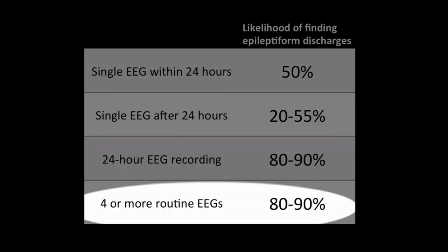On prolonged 24-hour EEG recording, the likelihood of picking up epileptiform discharges is much higher — in the range of 80 to 90%. But 10 to 20% of the time, even prolonged EEG can be normal in a patient with epilepsy. Several routine 30 to 60 minute EEG recordings can produce the same yield as a 24-hour recording, but may be less practical.